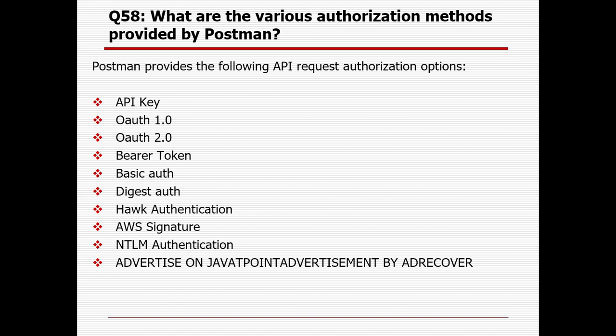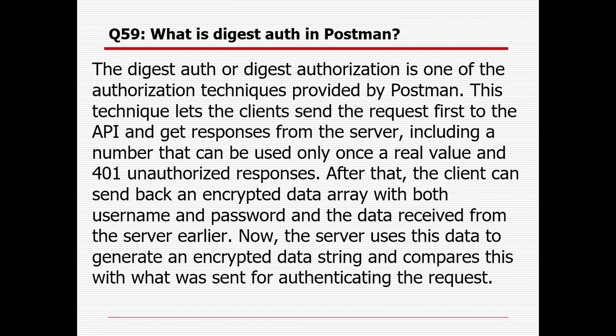What are the various authorization methods provided by Postman? Postman provides the following API request authorization options: API Key, OAuth 1.0, OAuth 2.0, Bearer Token, Basic Auth, Digest Auth, AWS Signature, and NTLM Authentication. These are the different authorization methods provided by Postman.